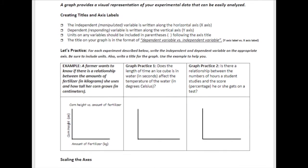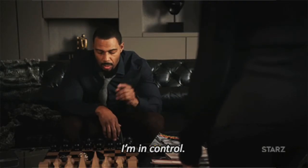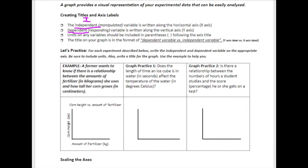Looking at our key checklist, first we want to know how to create a title and axes labels. Whenever we have a graph we're going to be graphing our independent variable and our dependent variable. The independent variable is the one we are manipulating — I control it, which is why it's independent with an 'I.' This variable goes along the horizontal x-axis.